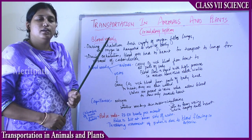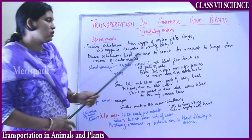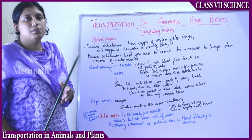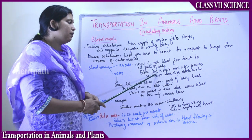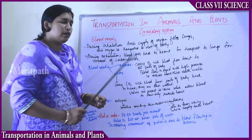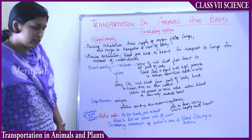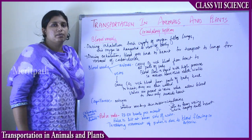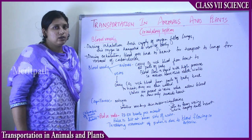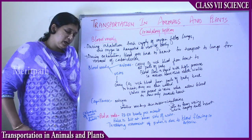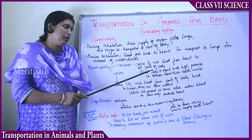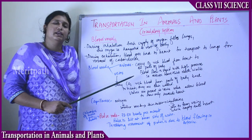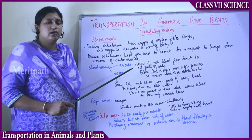Arteries carry oxygen-rich blood from the heart to all parts of the body. Blood flow in arteries is very rapid with high pressure. Arteries are always indicated with red color in any diagram or chart.